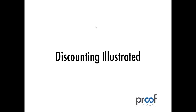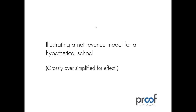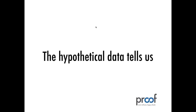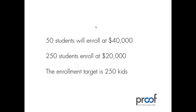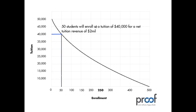Let me show you some pictures to illustrate what this discounting looks like. This is a grossly oversimplified model not meant to represent any real school. In my hypothetical school, the data tells us that 50 students will probably enroll if we set tuition at $40,000. But if I simply set the price at $20,000, I'll get 250 students, which happens to be my enrollment target. So why don't we simply set our price at $20,000? Let's take a look at why that's not a good idea.